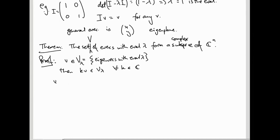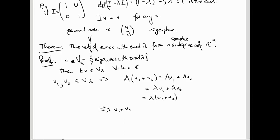If v1 and v2 are in V_lambda, then we need to show that their sum is in V_lambda. Well, if we do A(v1 plus v2), that's Av1 plus Av2. That's lambda v1 plus lambda v2. And that's lambda(v1 plus v2). So their sum is an eigenvector. So that shows you the set of eigenvectors for a fixed eigenvalue is a subspace.